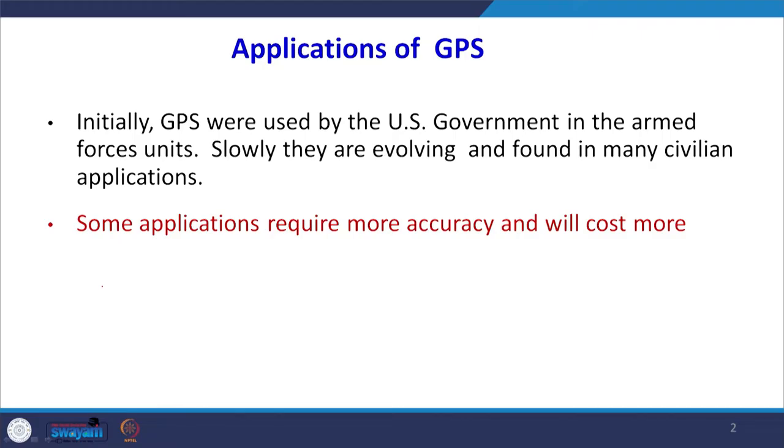Welcome to lecture 31, the last lecture on GPS. In this lecture we will cover various applications of GPS in civil engineering and outside civil engineering. When GPS was launched there was a restriction on the availability of the right kind of signal, but later that restriction was lifted, giving very good accuracy for various applications. They were developed for military applications initially, but when selective availability was lifted, they were used for many civilian applications. At present the number of civilian users is much more than military users.